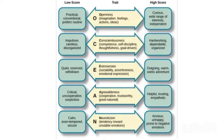Next is the A factor — Agreeableness. In the term itself you can understand what it stands for: agreeing with others. Agreeableness includes being cooperative, trustworthy, and good-natured. A person high in agreeableness would be very helpful, trusting, and empathetic — meaning they understand others' feelings. Whereas a person low in agreeableness would be critical, uncooperative, and suspicious — not trusting others easily and being doubtful towards others.